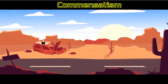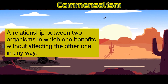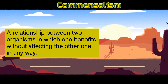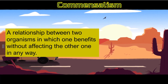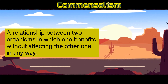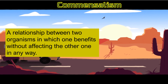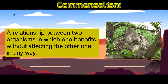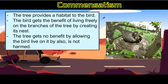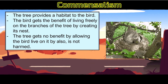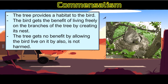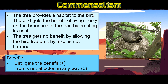Next is commensalism. A relationship between two organisms in which one benefits without affecting the other one in any way. Ito ang ecological relationship kung saan, habang ang isa ay may natatanggap na benepisyo, ang isa naman ay hindi apiktado sa kahit anong paraan. For example, a tree and a bird. The tree provides a place for the bird to live. The bird gets the benefit of living freely on the branches of the tree.